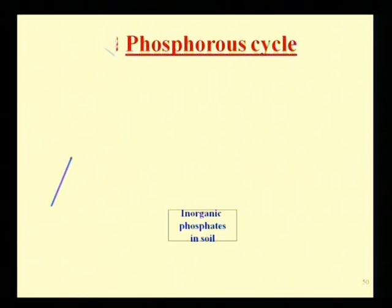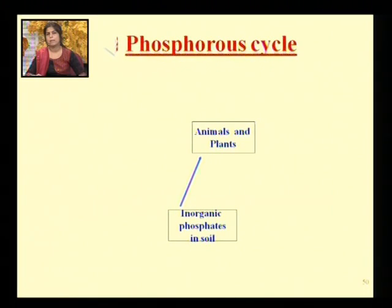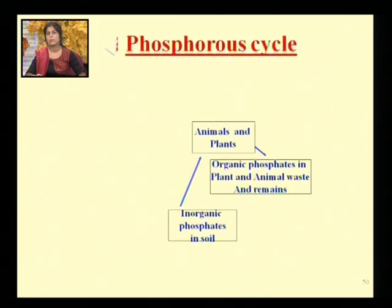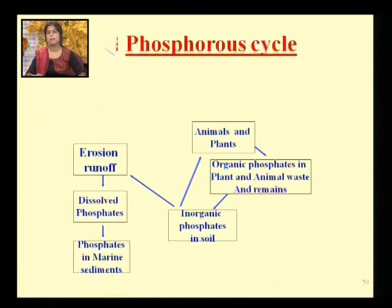In the phosphorus cycle overview, phosphates present in the soil are solubilized by nitric acid and H2SO4. The solubilized phosphorus is taken up by plants; plants are eaten by animals. When both die, their dead organic compounds decompose, and the organic phosphorus in the soil may again be represented as organic phosphates in the soil.